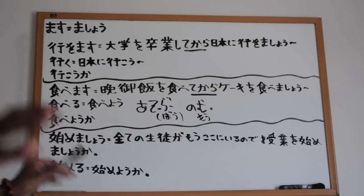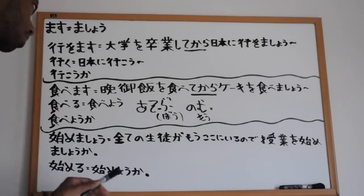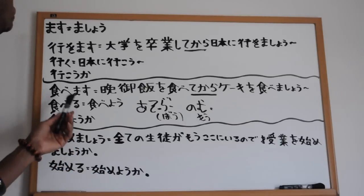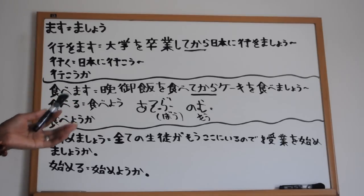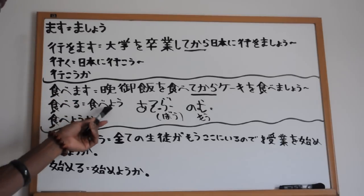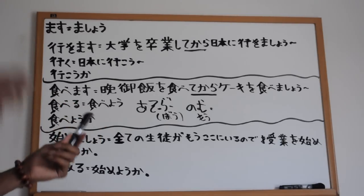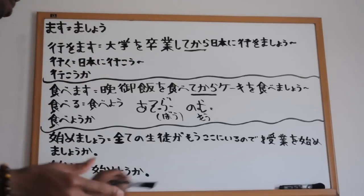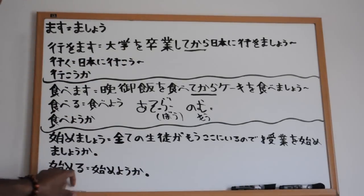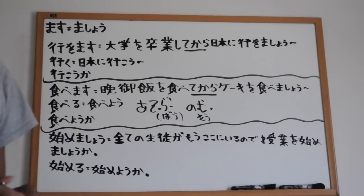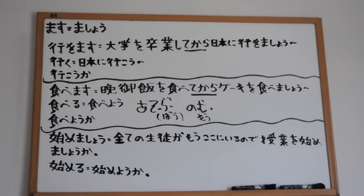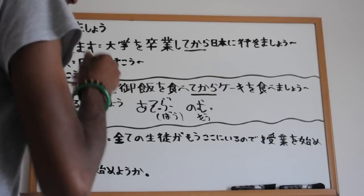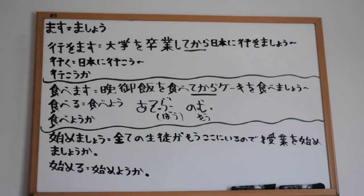Now, you do have some exceptions. Like taberu - you don't take the ru and say ro. You have to drop off the ru and add yo: tabeyou. There are different verb classes, and I think I talked about this before. All the verbs are in different classes and they change. You need to get the JLPT Level 3 book because they explain things really well when it comes to those different types of charts.